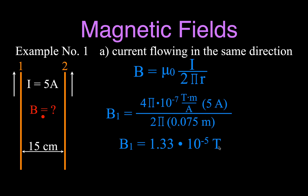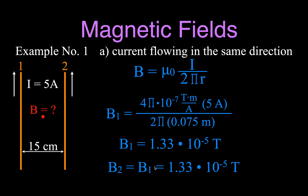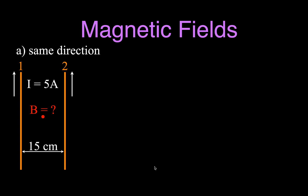Teslas are the units for the magnetic field. Now, what about the magnetic field strength from wire number two? That wire is equidistant and has the same current, so the magnitude of the magnetic field from wire number two is the same — it equals the magnetic field from wire number one, which is also 1.33 × 10⁻⁵ Teslas. Now we want to know the total magnetic field strength at that point. Magnetic field is a vector quantity with both magnitude and direction, so we know the magnitudes but we've got to figure out the directions before we add them up.